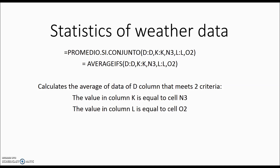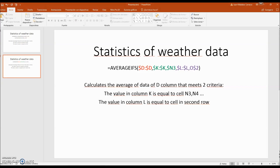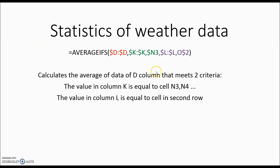We can transform this formula like shown here, where we have AVERAGEIFS, then the range, the first condition, and the second condition. Here again we have two conditions. The first is related to the values in column K, and we add a dollar sign to indicate that column K is going to be used independently of where the cell we are calculating is located. We also have a dollar sign before N.